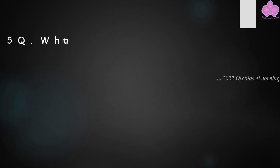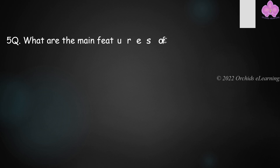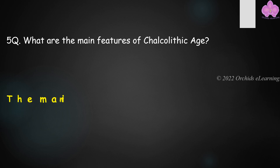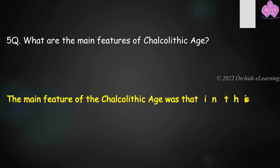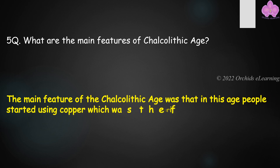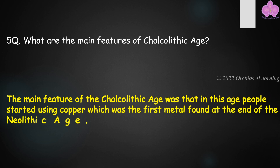What are the main features of the Chalcolithic Age? The main feature of the Chalcolithic Age was that people started using copper, which was the first metal found at the end of the Neolithic Age.